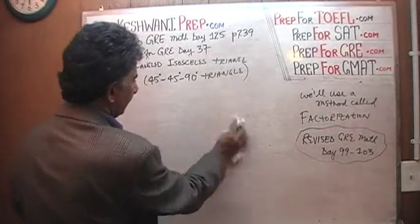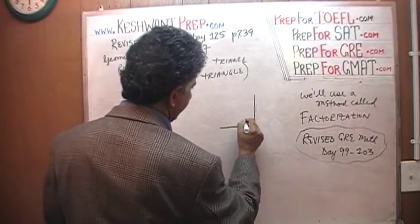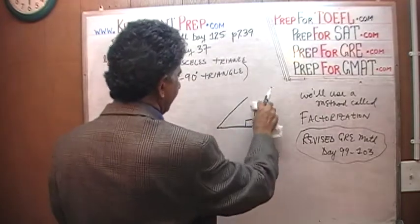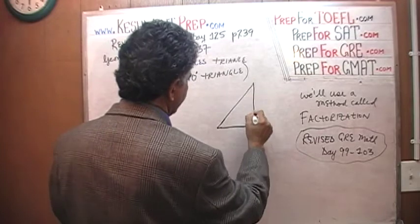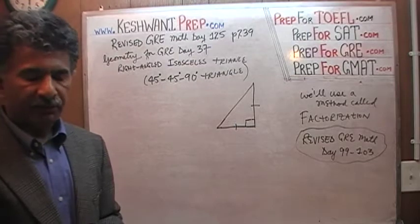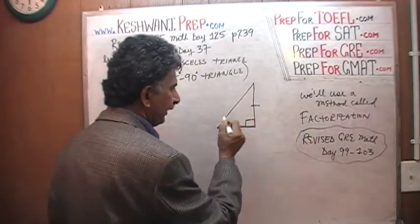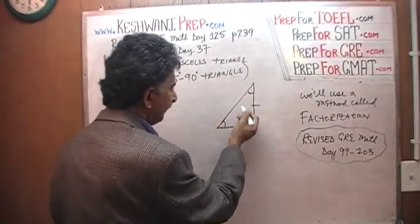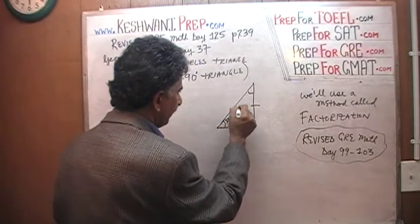Obviously, it has a right angle, it looks something like this. This is a right angle here, and this side here equals to that side. This is known as a right-angled isosceles triangle. Since this side is equal to that side, this angle equals that angle, and if the sum of these two angles is 90, therefore it will have to be 45 and 45.